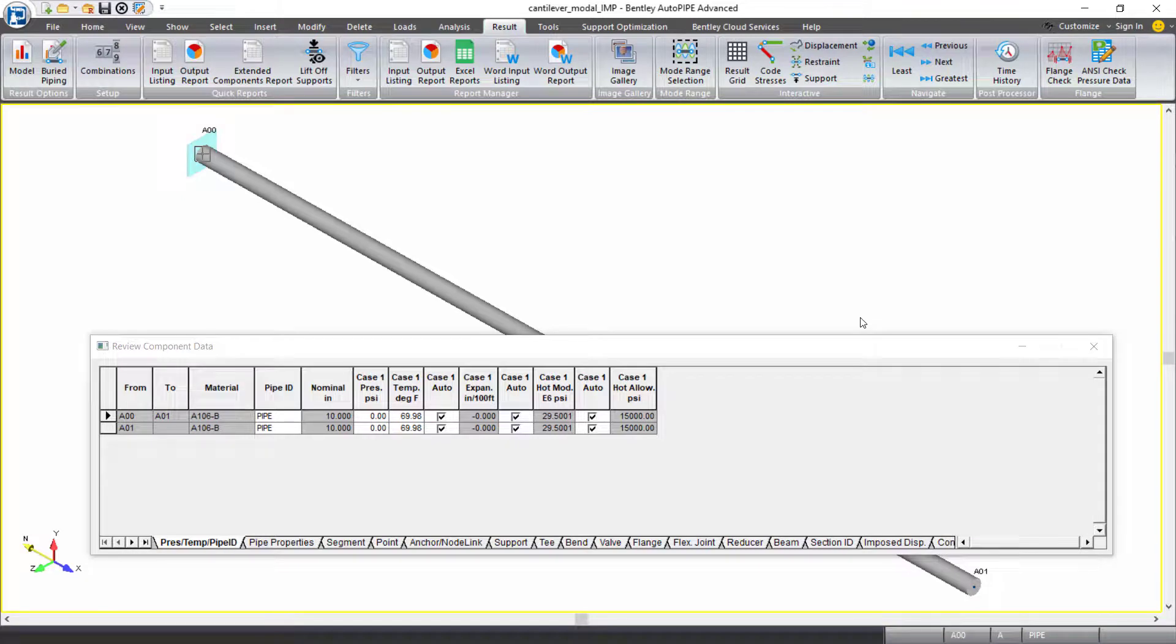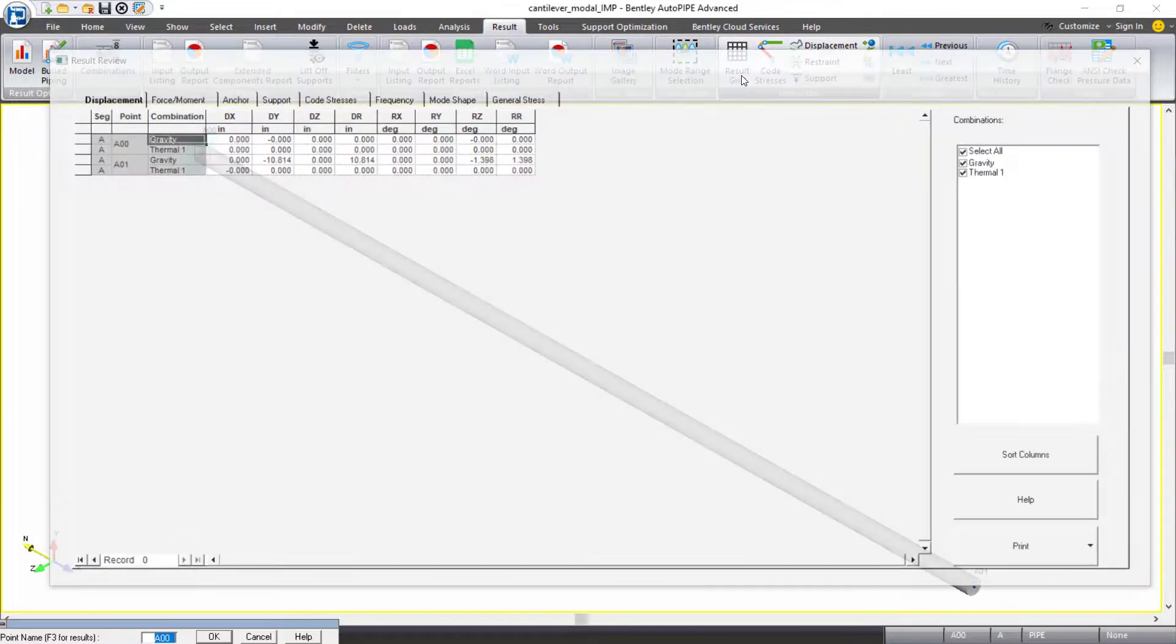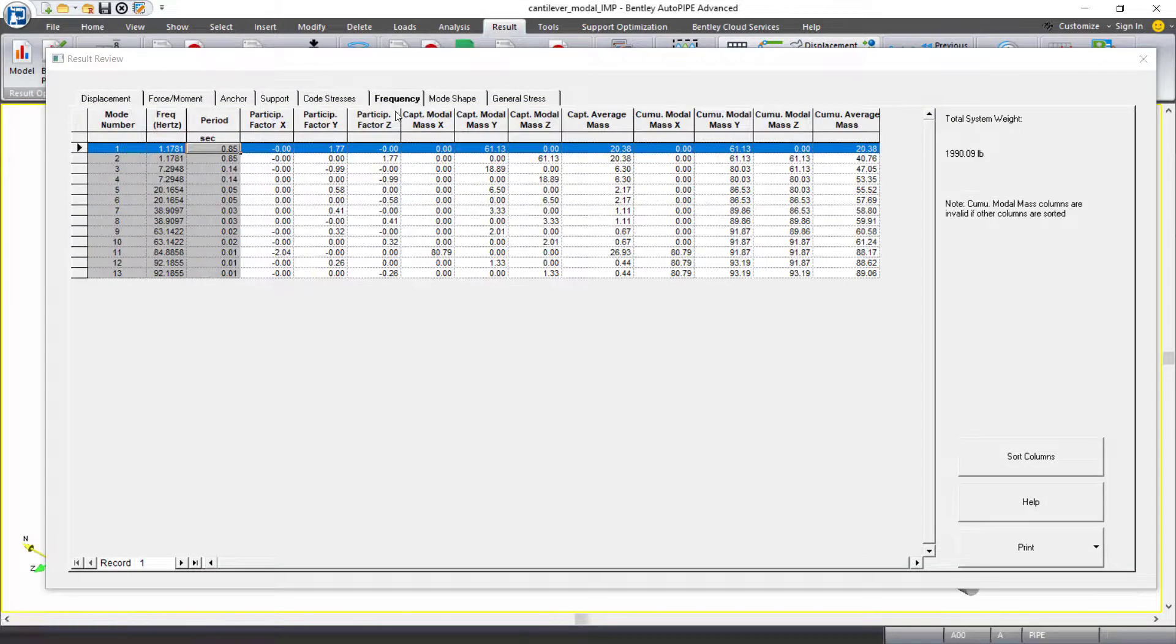In AutoPIPE, we have reviewed our mode shapes interactively on the screen, but we also want to review our frequency report or frequency grid to review our captured modal mass for our modal analysis. We will be using the result grid often throughout the dynamic analysis training class. So from the result ribbon, under the interactive grouping, I'll open the result grid and I'll select the frequency tab.